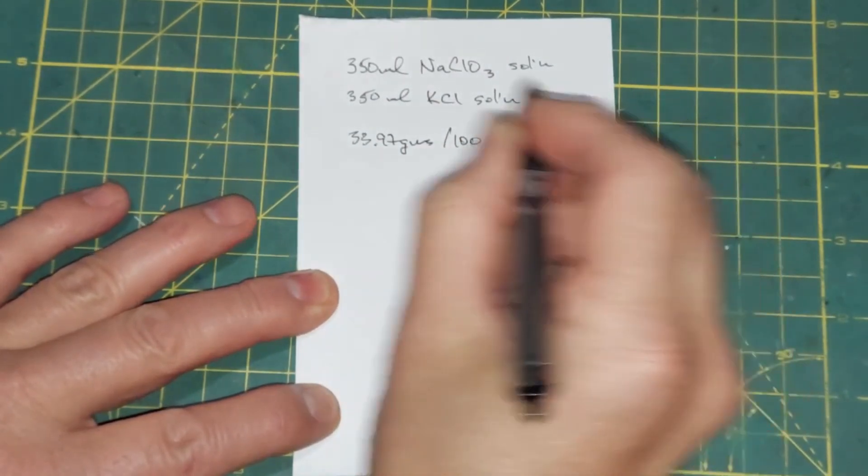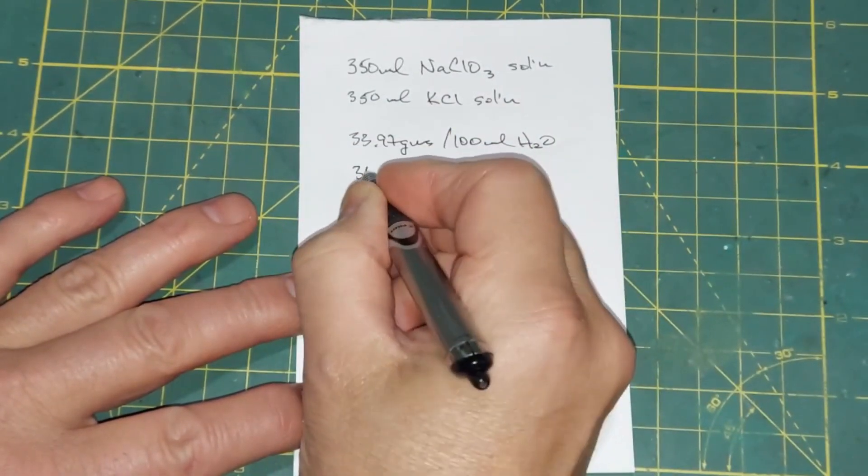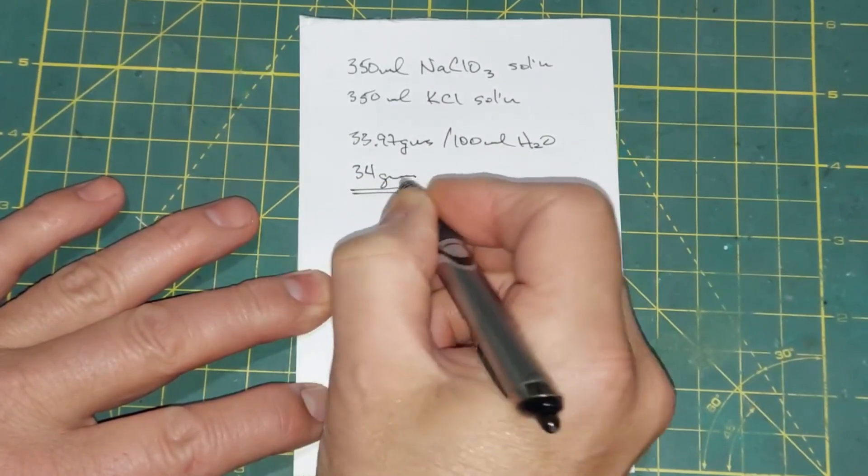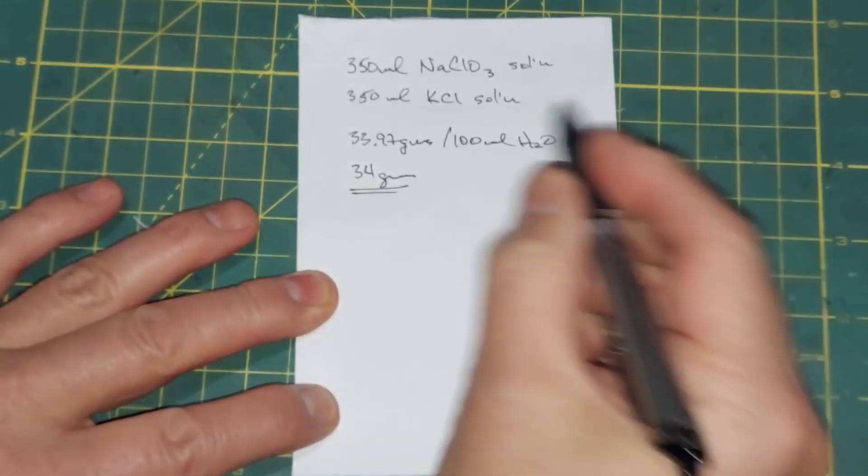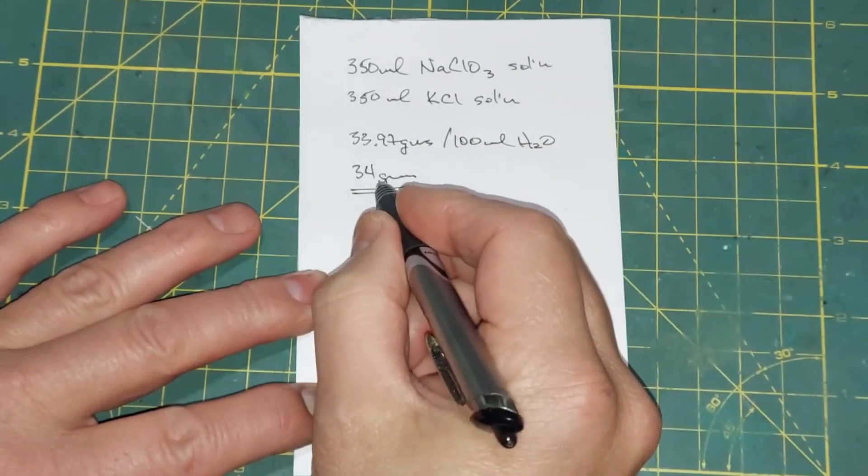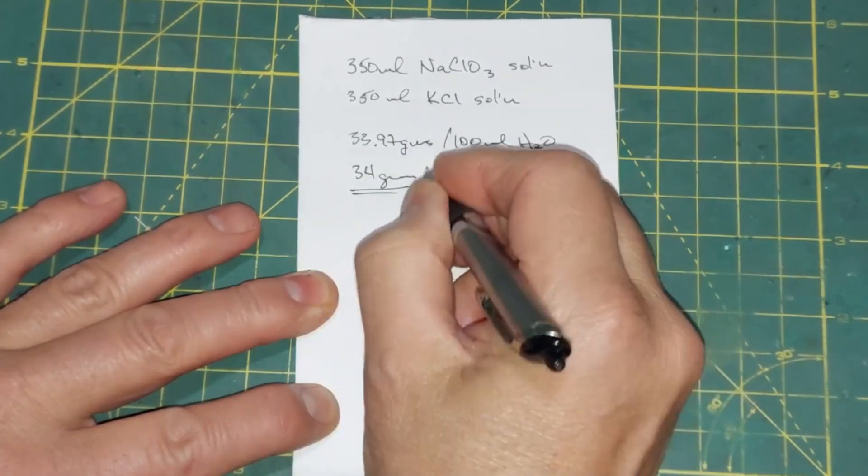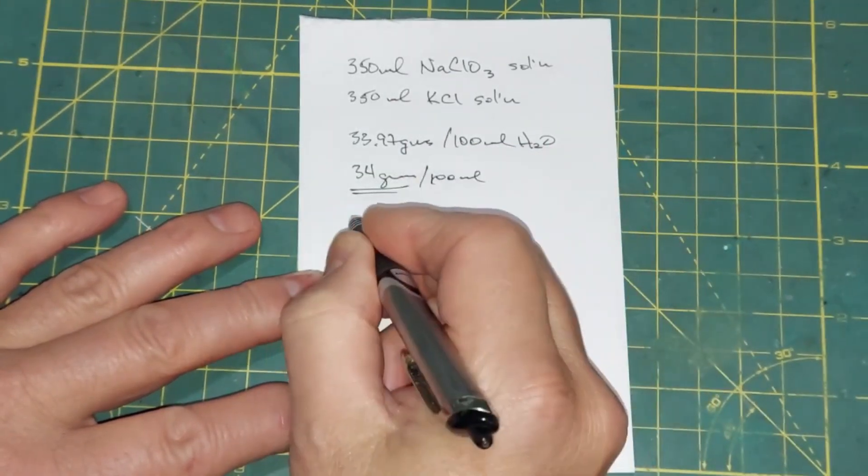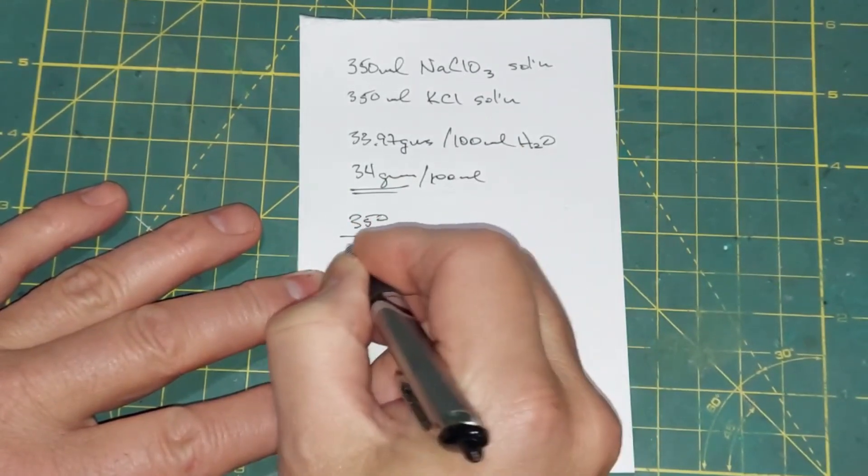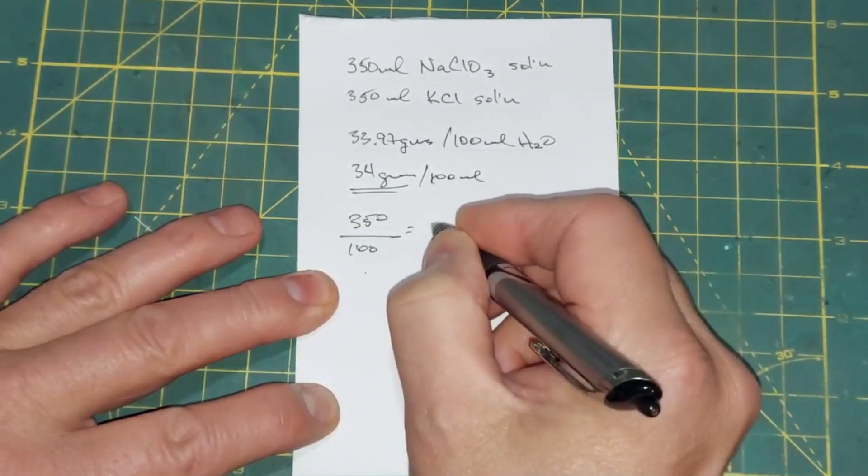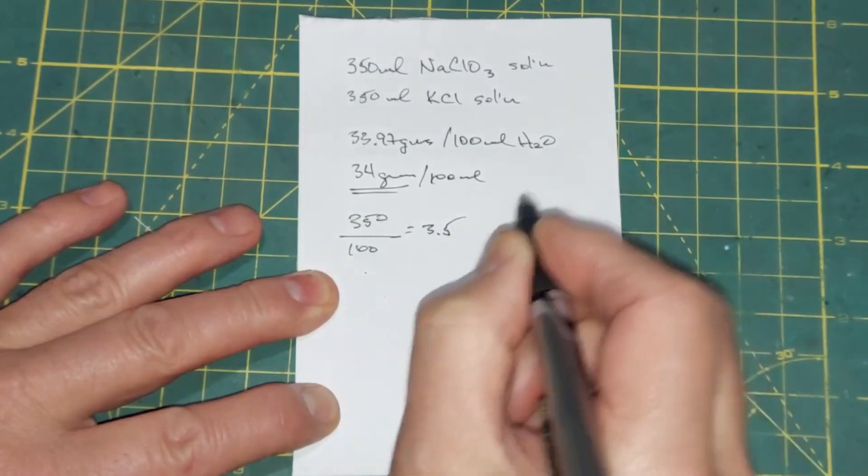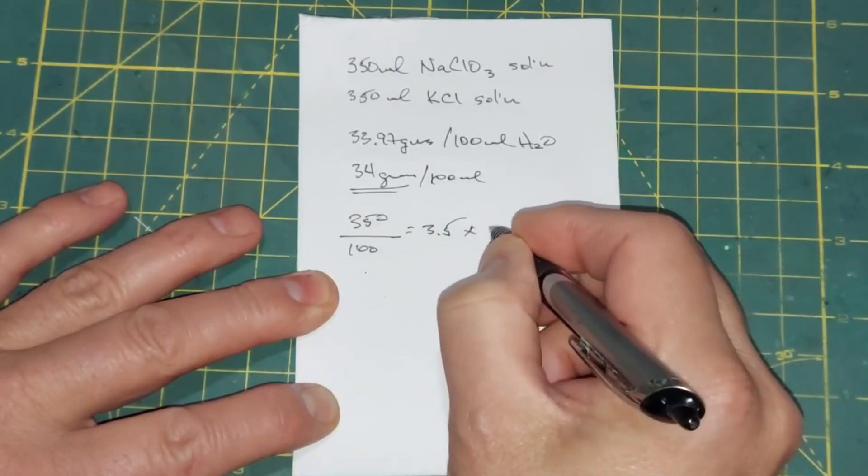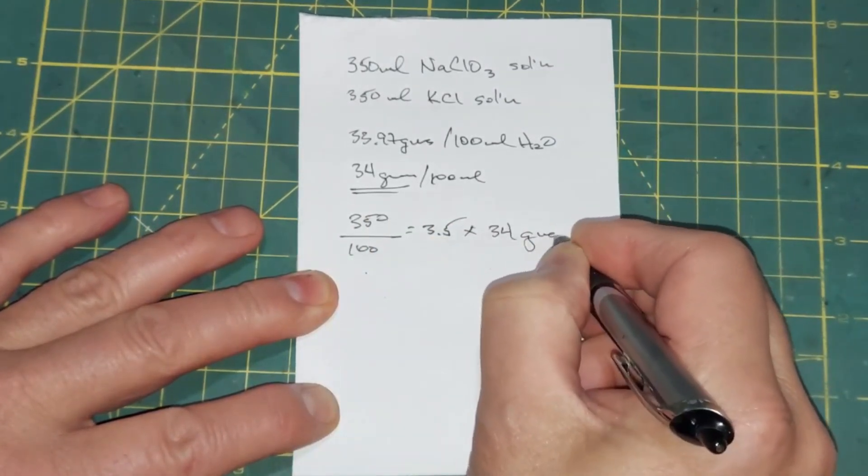So we have 350 milliliters we need to make. We have 34 grams, and that's per 100 milliliters again. So if we take the 350, divide it by 100, we get 3.5, and that's what we need to multiply by our 34 grams of KCl here.